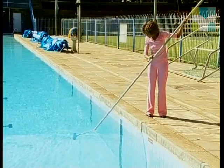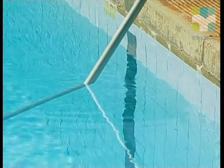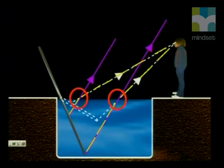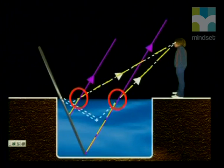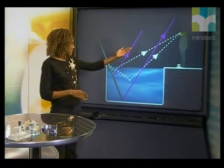Remember that when we put the pole into the pool, it looked like it changed shape. We discovered in lesson 2 that this was because the light from the pool bends as it leaves the water. This was the diagram we drew to explain what we were seeing. We can see that the light bends as it leaves the water, and our brains think that the light travels in straight lines, so it appears as if the pole has been bent. We call this refraction.